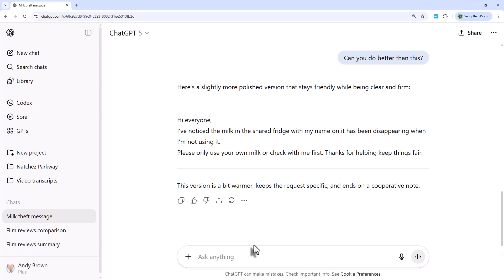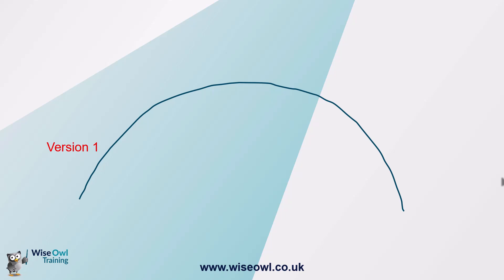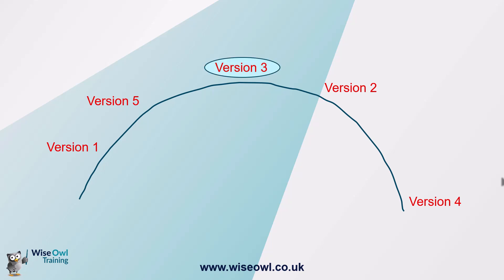It produces a slightly more polished version: 'Hi everyone. I've noticed the milk in the shared fridge with my name on it has been disappearing and I'm not using it. Please only use your own milk or check with me first. Thanks for helping keep things fair.' There's a concept in AI called iterate until revert. You begin with a version and use these principles to improve it. You might get a second version clearly better than the first, then a third even better. But AI tools will always suggest improvements even when none are possible. By the fourth or fifth version you may have passed your optimum — the trick is to recognize the best version and revert back to it.